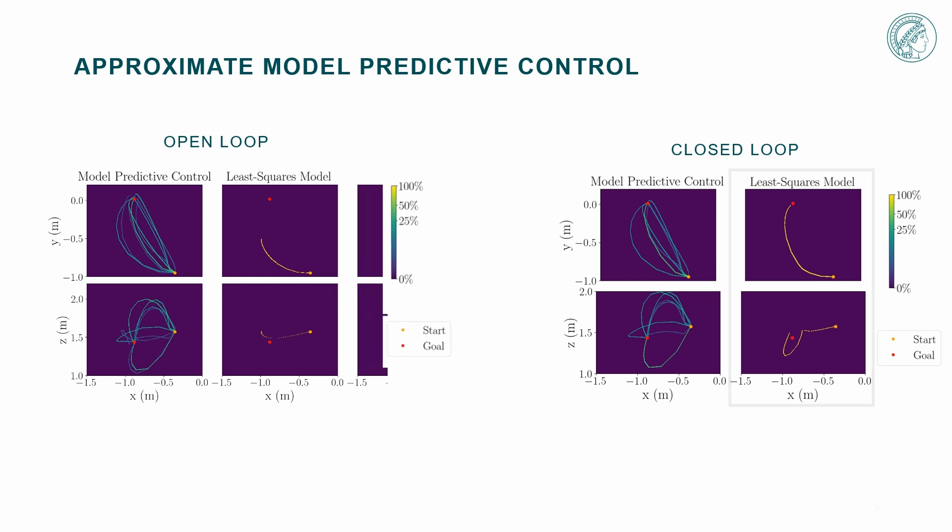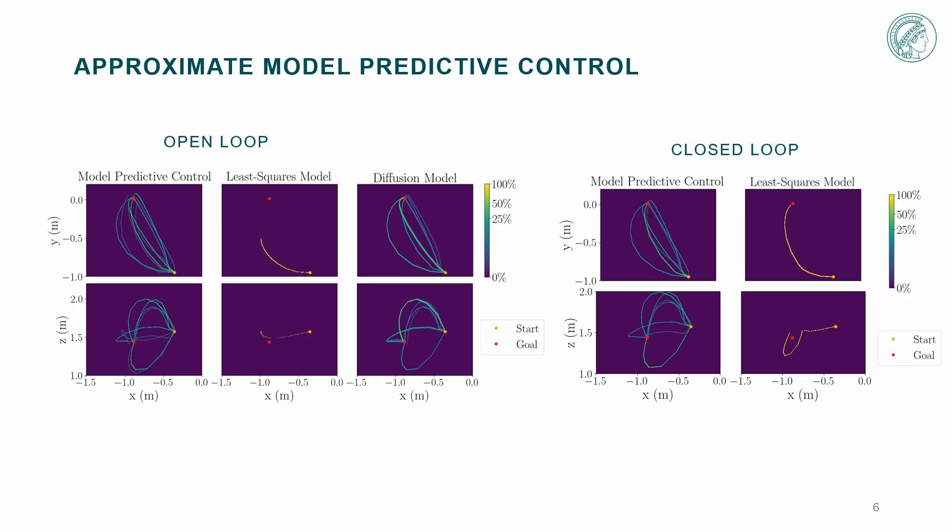Instead, we found that diffusion models can effectively capture the different modes of the MPC solution distribution. This avoids mode averaging and leads to better retention of MPC's theoretical guarantees such as feasibility and convergence.